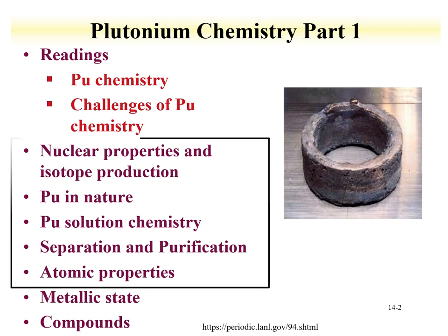Lecture 1 is going to cover nuclear properties and isotope production for plutonium. We're going to discuss plutonium in nature — actual natural plutonium in nature — at extremely small amounts. We'll describe how one can determine it and where it comes from. We'll also talk about plutonium solution chemistry, exploring trends in the actinides where we see the yl-oxygen pairing with plutonium-5 and plutonium-6.